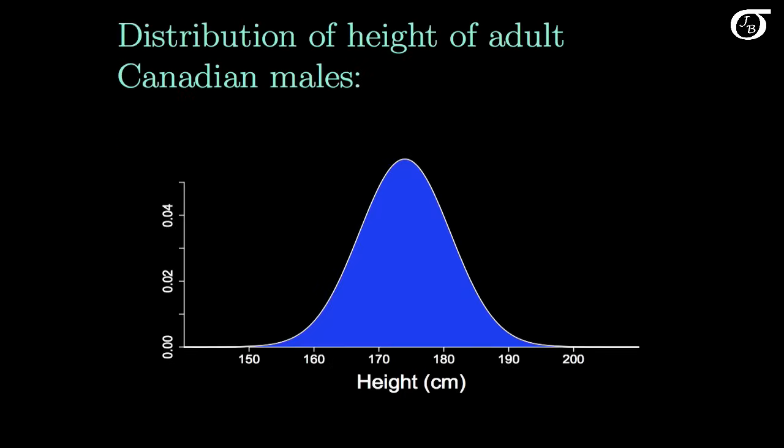Here is approximately the distribution of the height of adult Canadian males. Now height is a continuous random variable and it's going to have a continuous probability distribution. And this looks something like a smooth version of a histogram.